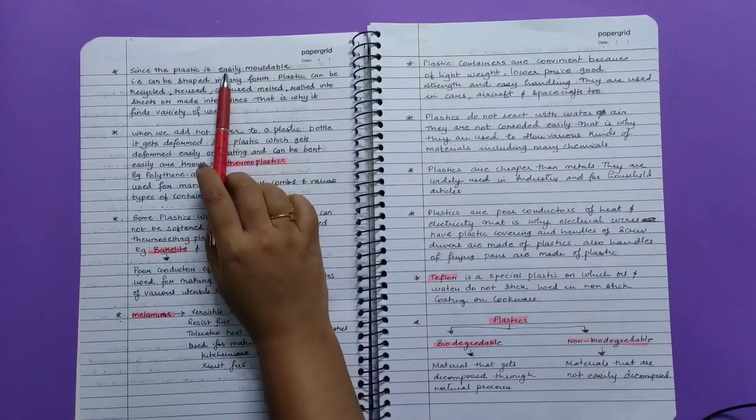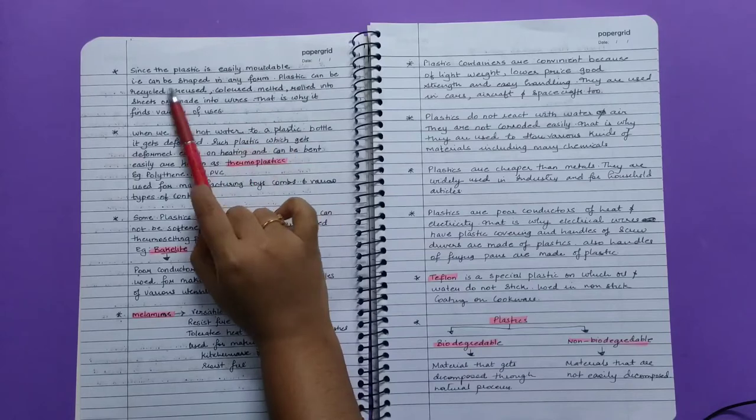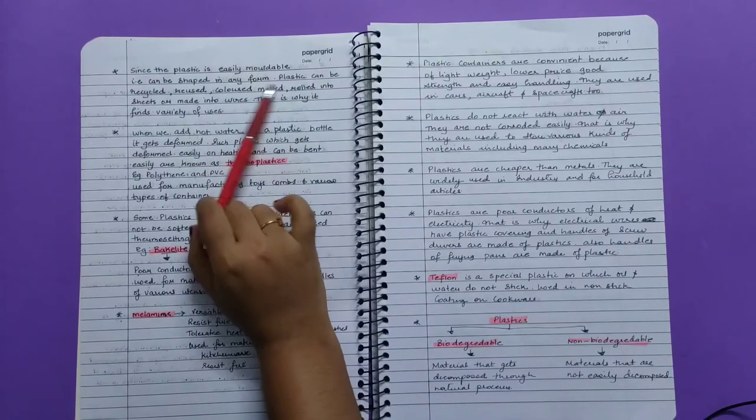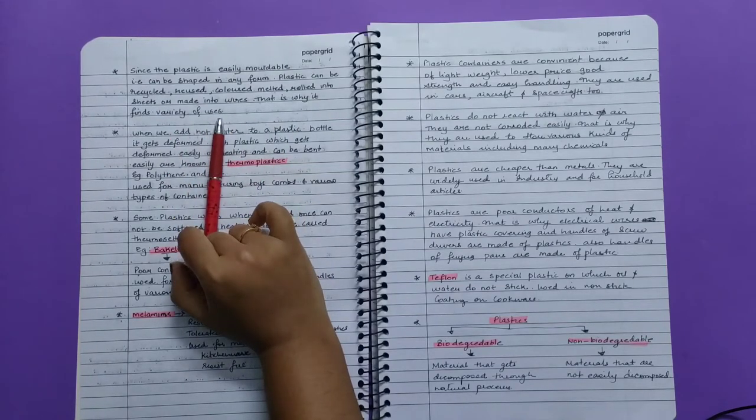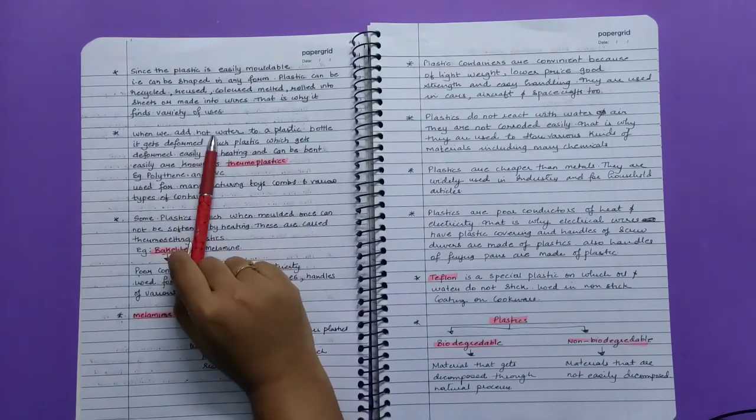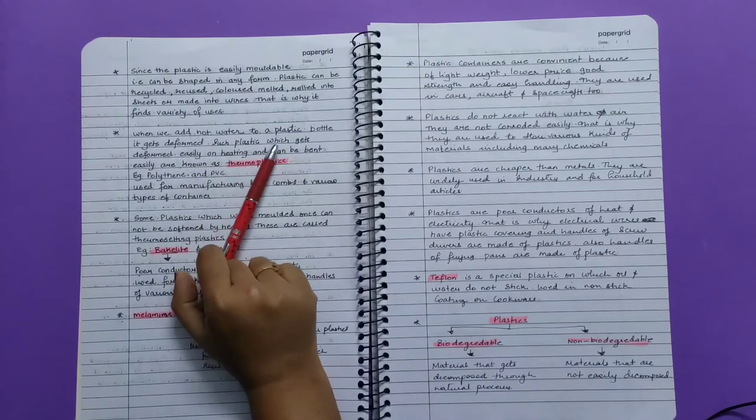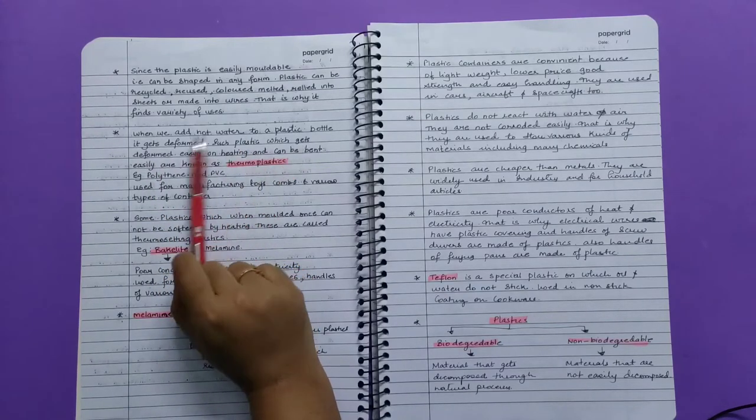Since plastic is easily moldable, that is, it can be shaped in any form, plastics can be recycled, reused, colored, melted, rolled into sheets, or made into wires. That is why it finds a variety of uses. When we add hot water to a plastic bottle, it gets deformed. Such plastic which gets deformed easily on heating and can be bent easily are known as thermoplastics.